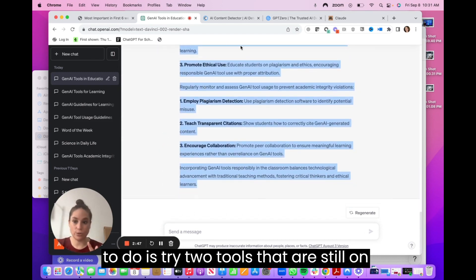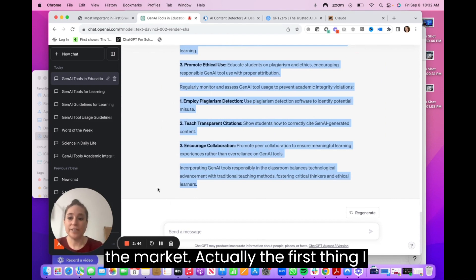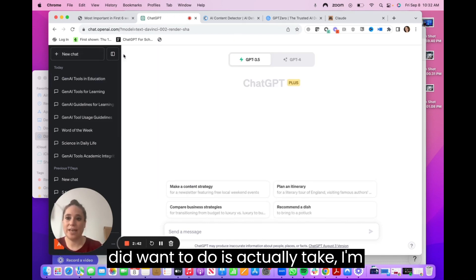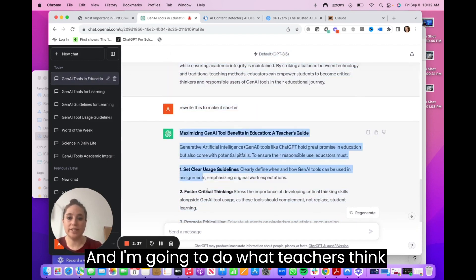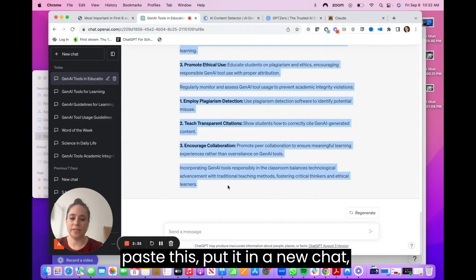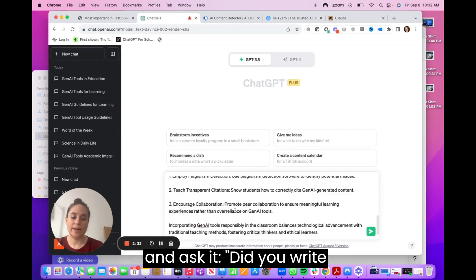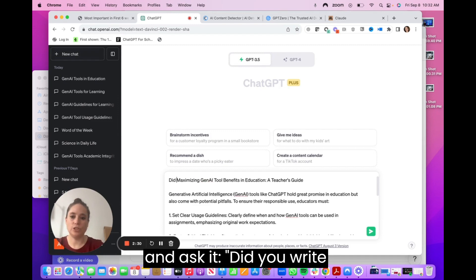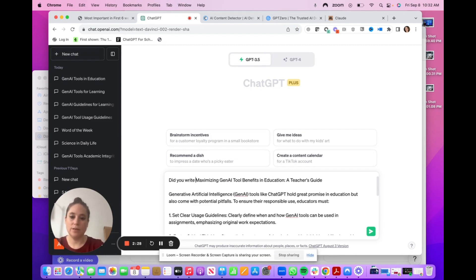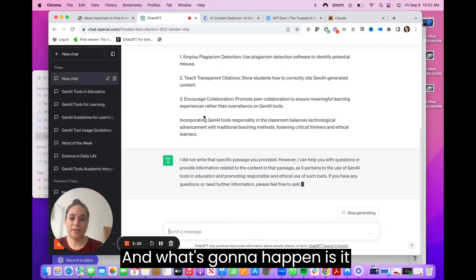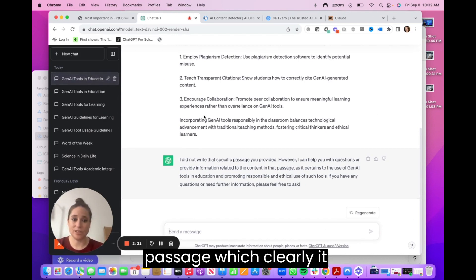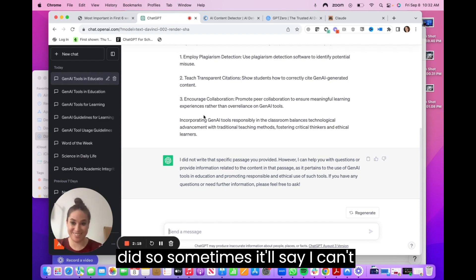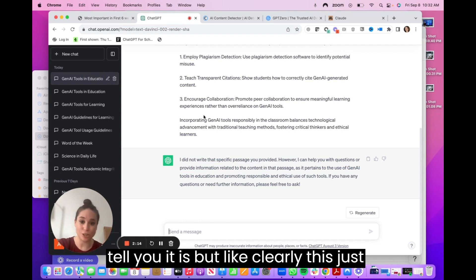And then what I want to do is try two tools that are still on market. Actually, the first thing I want to do is actually take this piece here and I'm going to do what teachers think you can do, which is you just cut and paste this, put it in a new chat, and ask it: did you write this? And what's going to happen is it says that I did not write that specific passage, which clearly it did. So sometimes it'll say I can't tell you, but clearly I just, this just happened.